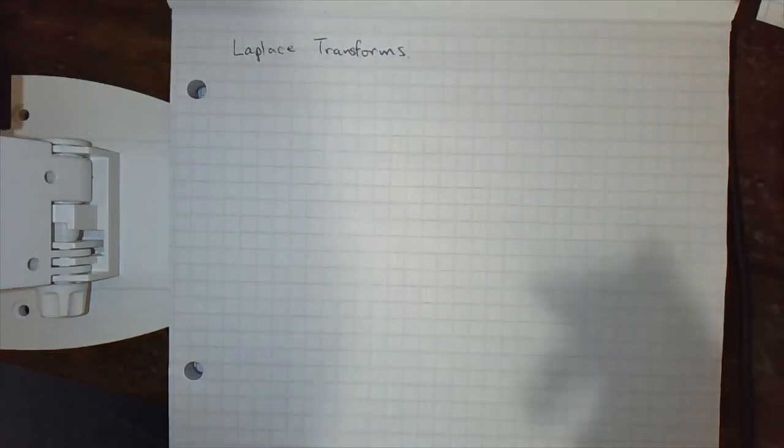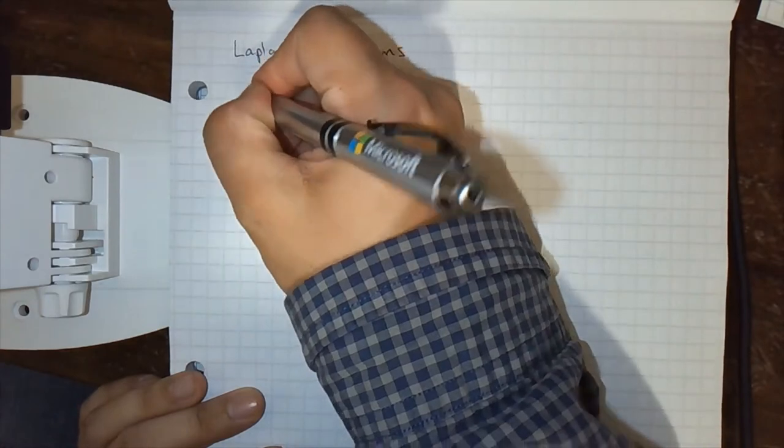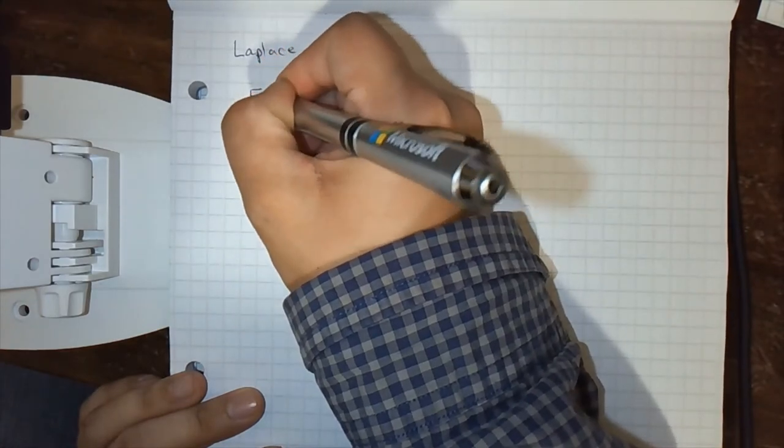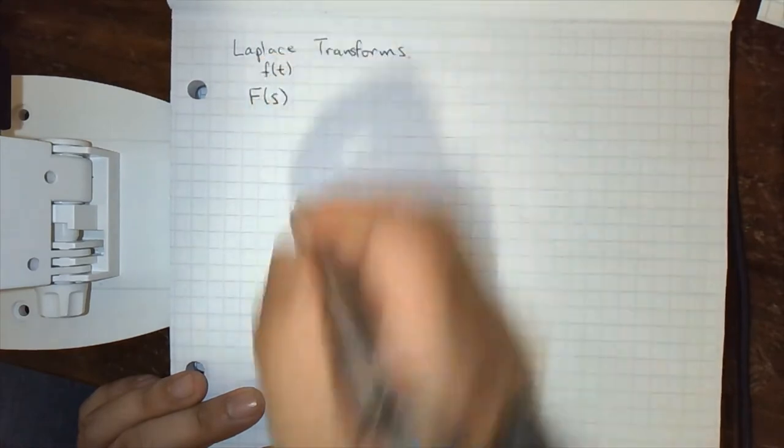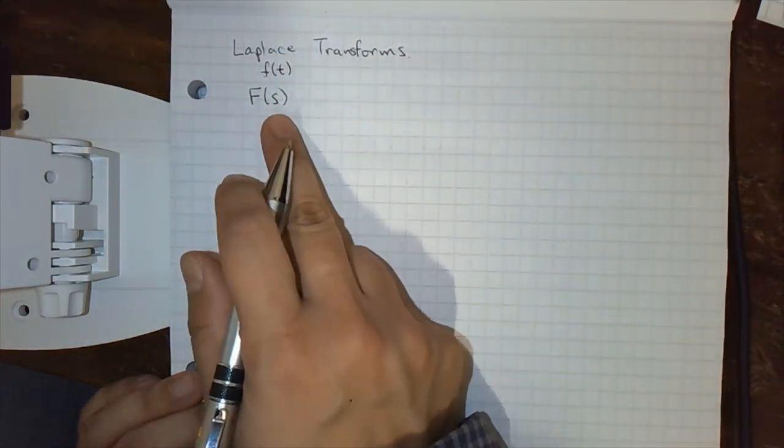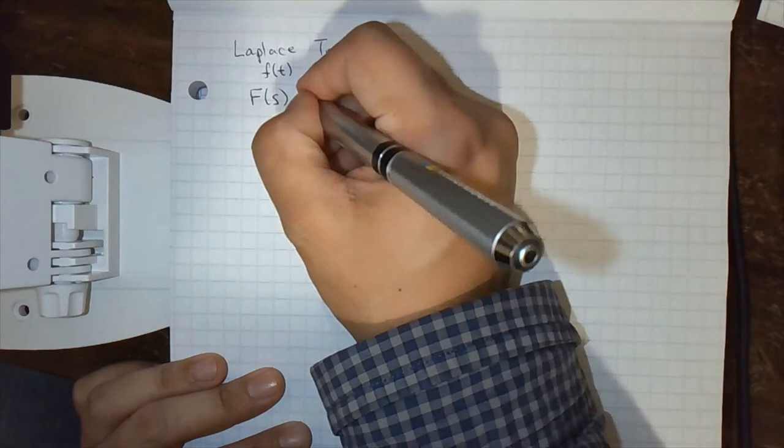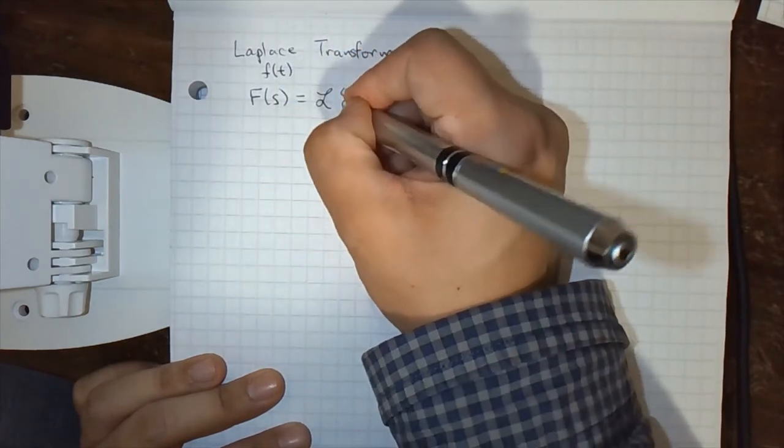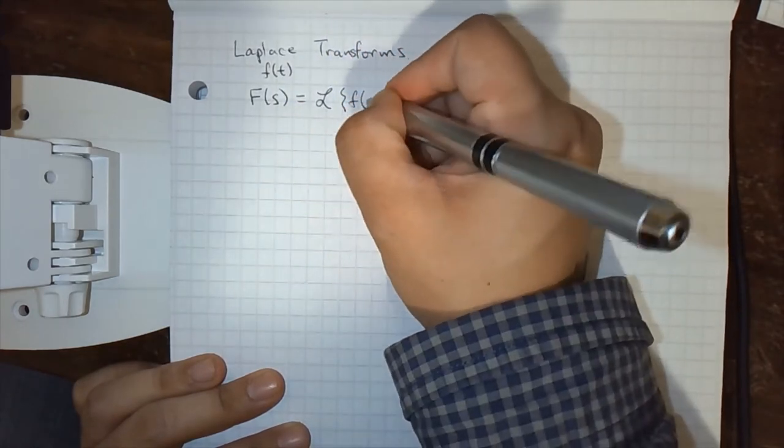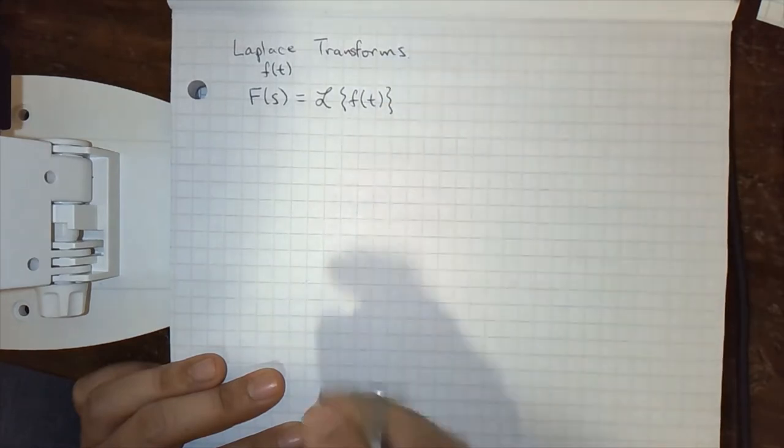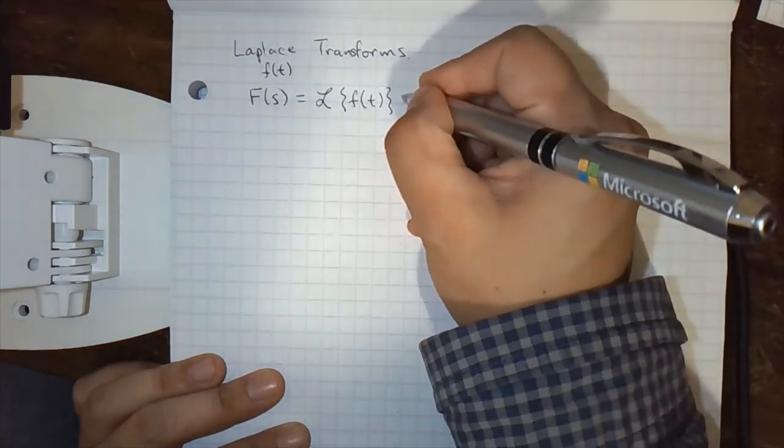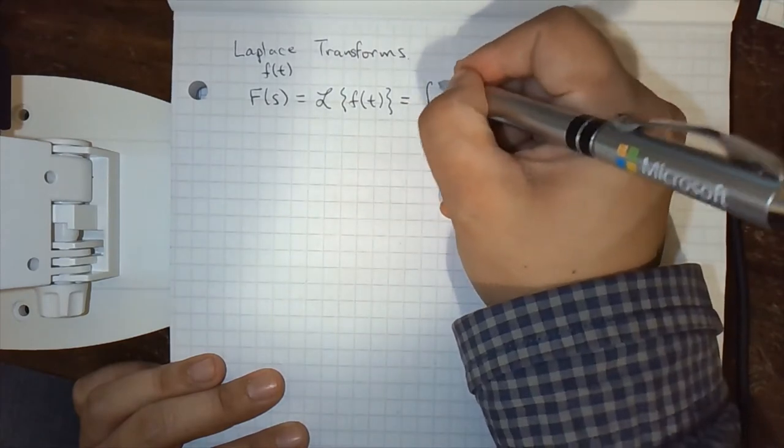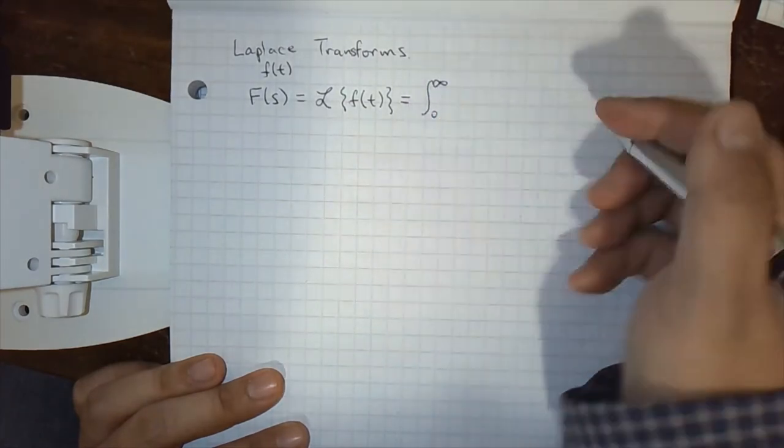All right, so bear with me on this definition. It's a little bit mysterious at first. So given some function f(t), we're going to define some other function F(s), which we'll denote L{f(t)}. And this is the Laplace transform of f(t). And we're going to define this as the integral from 0 to infinity. So this is an improper integral.